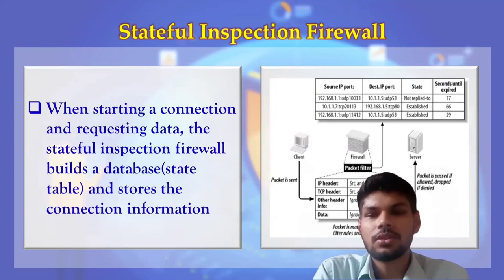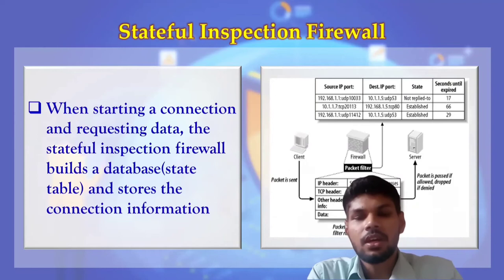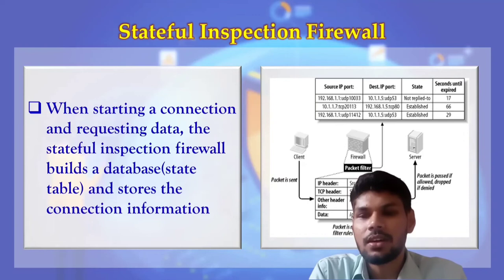Stateful inspection firewalls also work at the session layer. When there is a request, the firewall tracks it by maintaining a database called a state table, which includes IP addresses of source and destination and port numbers. When the firewall receives a response, it checks the state table to make sure the response came from the requested server, and also checks the actual data to ensure there is no attack.